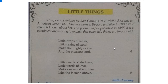I will read this poem stanza by stanza and explain it stanza by stanza. This is the first stanza: 'Little drops of water, little grains of sand, make the mighty ocean and the pleasant land.' In this first stanza, a comparison is being made — little drops of water join together to form mighty oceans, and little grains of sand join together to make the pleasant land.